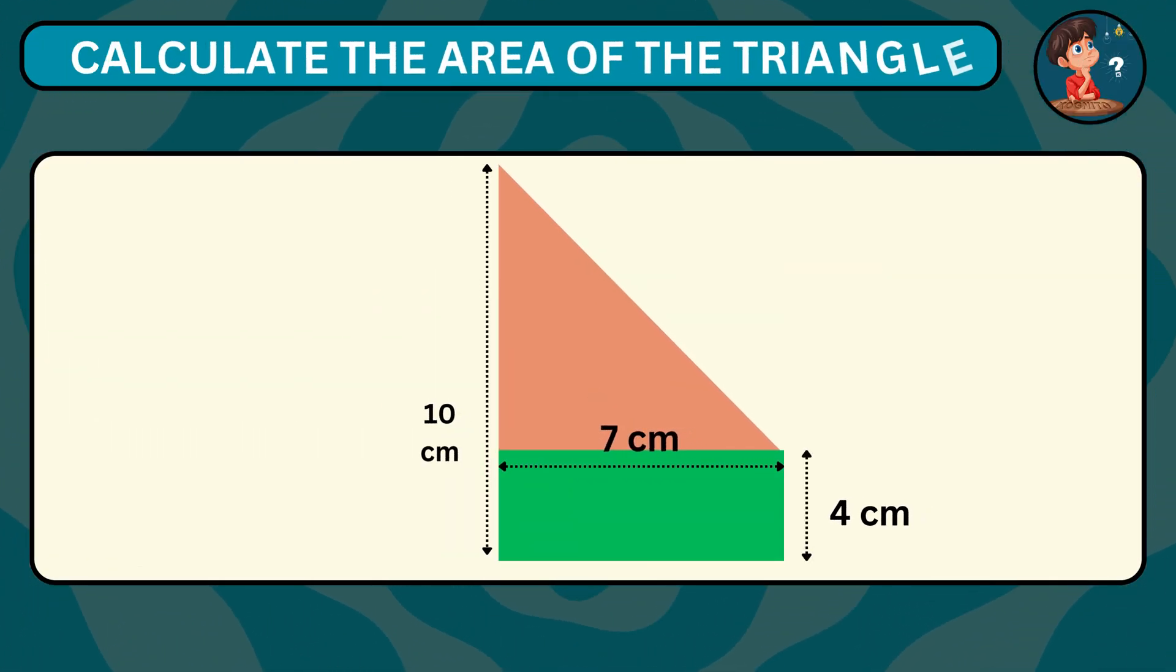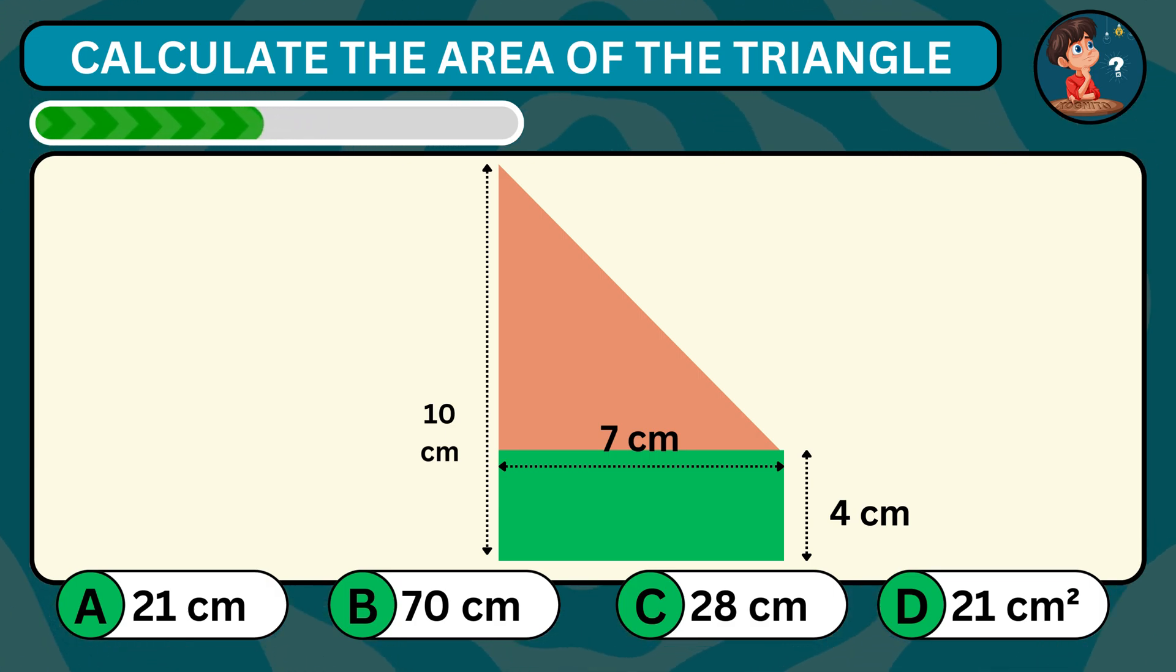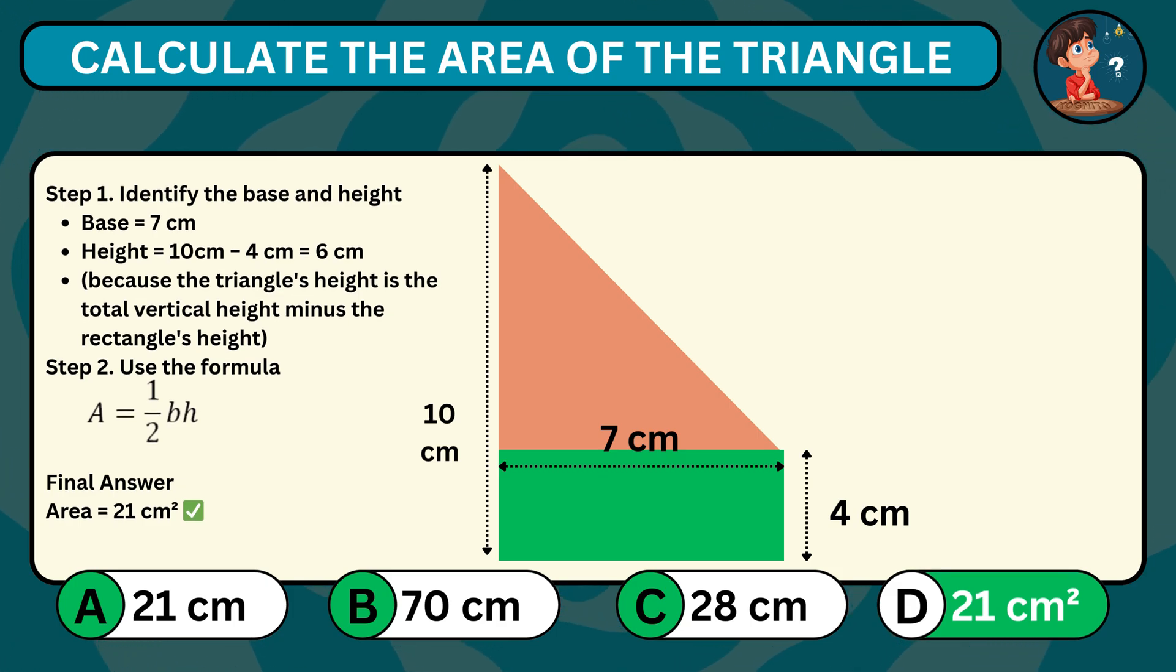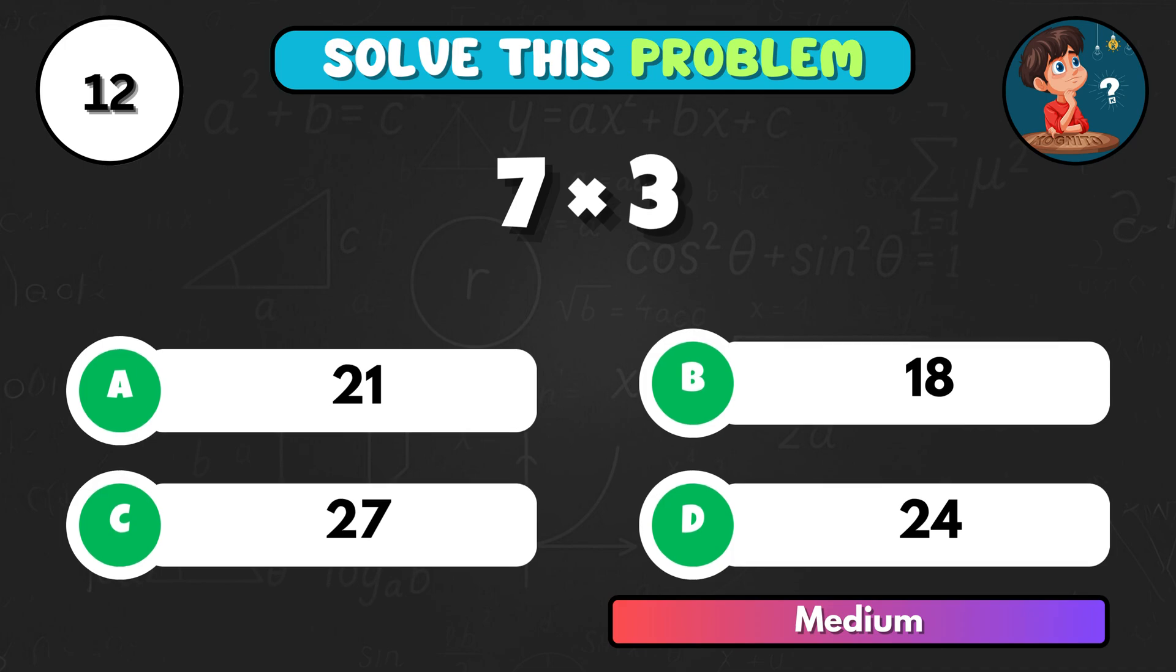Can you figure out the area of the triangle formed within this geometric shape? It's D, 21 centimeters squared. Quick challenge. 7 times 3 equals what? It comes to A, 21.